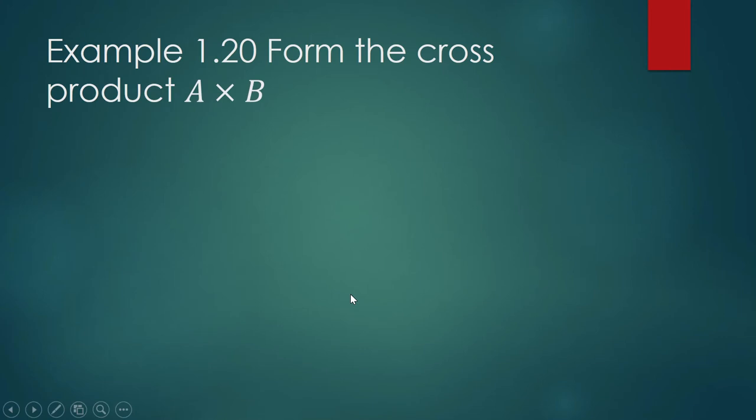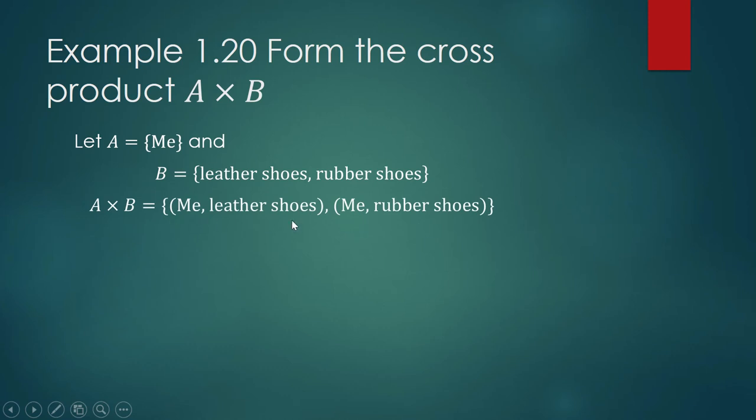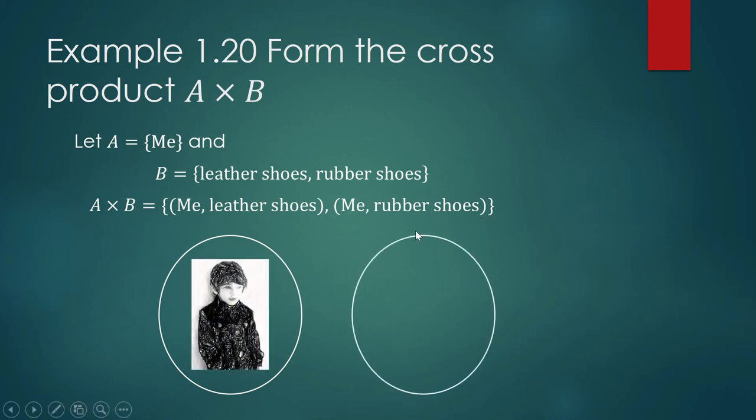Example 1.20: Form the cross product A cross B. A and B don't have to be always numbers. A can be the set containing me, and B is the set containing my shoes - leather shoes and rubber shoes. Let us form A cross B. You can imagine this as choosing one shoe when you go to school. I can go to school with my leather shoes or with my rubber shoes. A cross B can be shown visually as pairing - one set containing me, the other my collection of shoes.